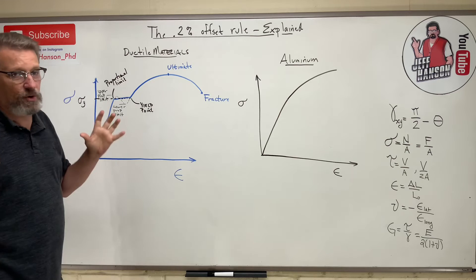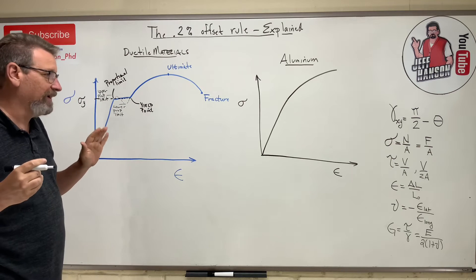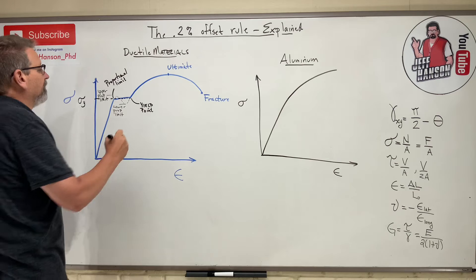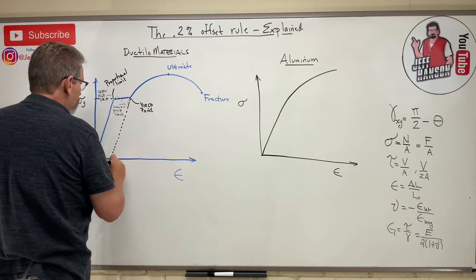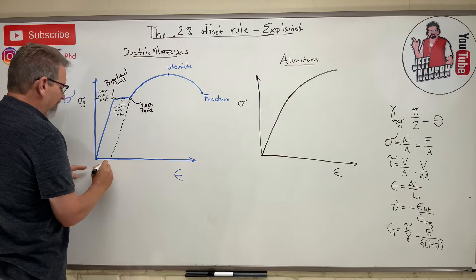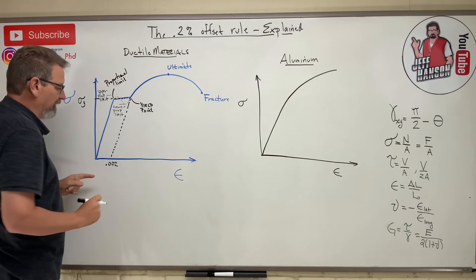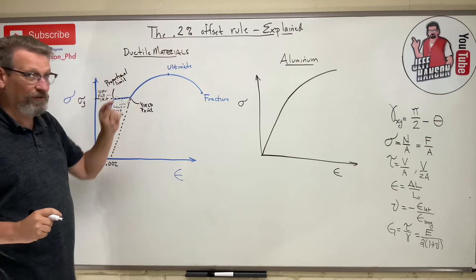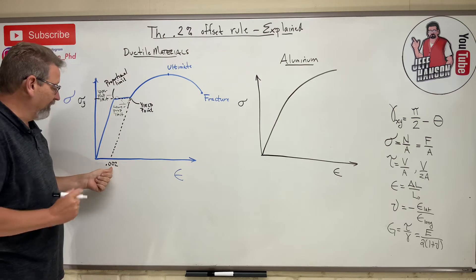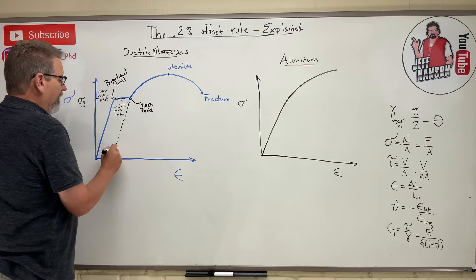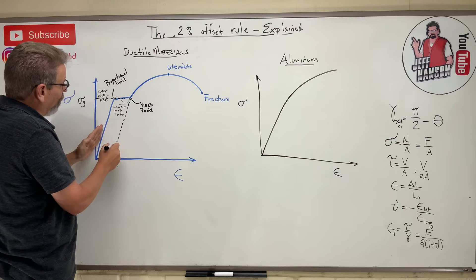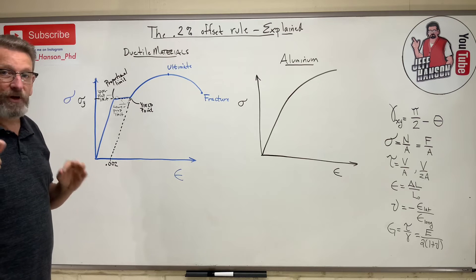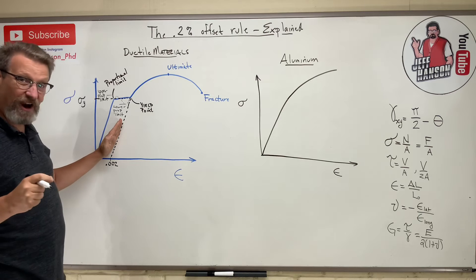Because this happens so fast and is so hard to observe, we determine where the yield point is by using the 0.2% offset rule. We come in and draw a line at 0.002 — because 0.2 percent means we move the decimal two places — and at that strain value of 0.002, we draw a line parallel to the elastic curve to find where the yield point is.